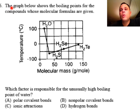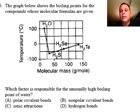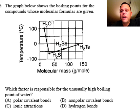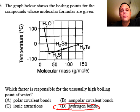Question six: the graph shows boiling points for H2O, H2S, H2Se, and H2Te. The question asks which factor is responsible for the unusually high boiling point of water — why is it so much higher than you would predict by following the trend of the other compounds? The answer is the hydrogen bonds that form between separate water molecules, which require significantly more energy to overcome.